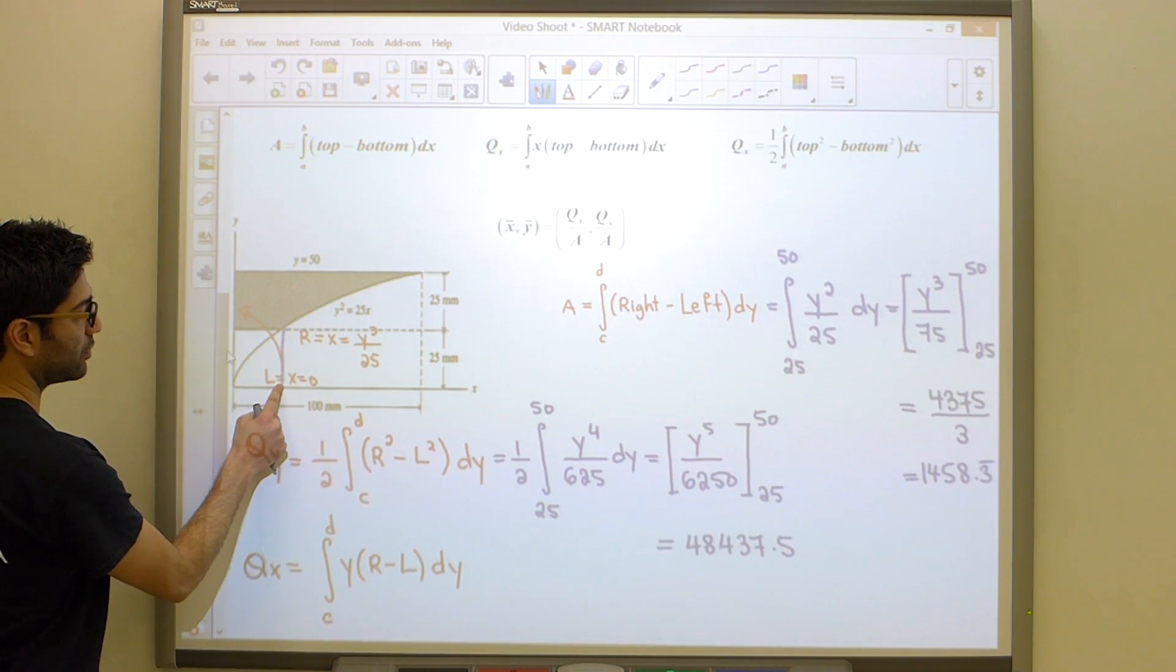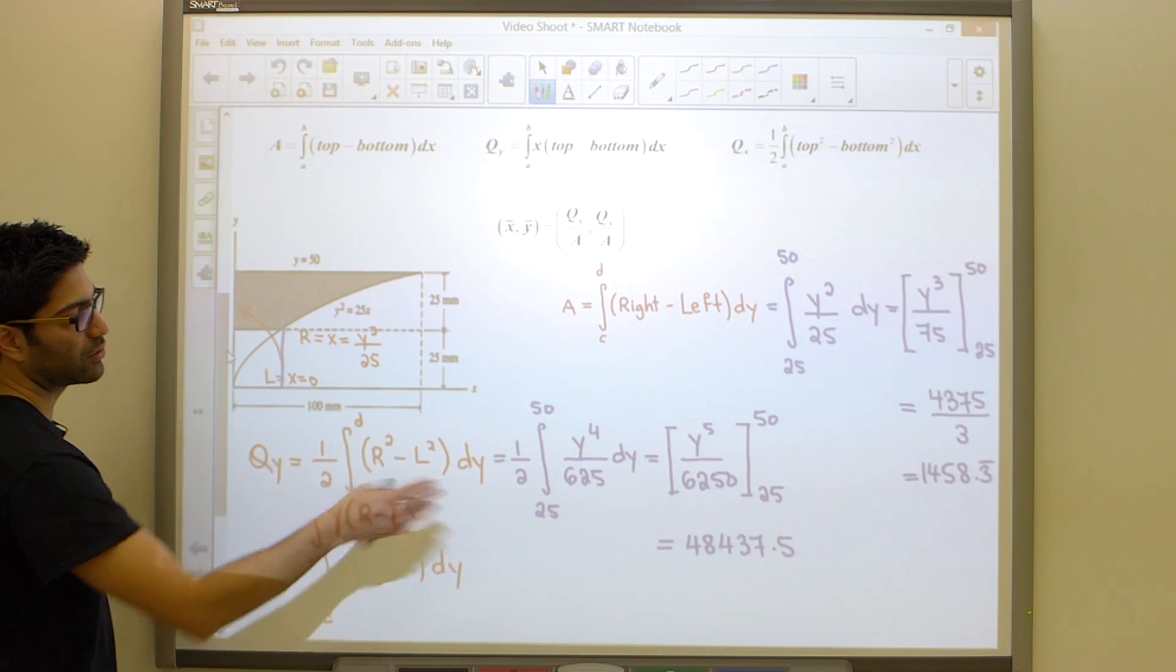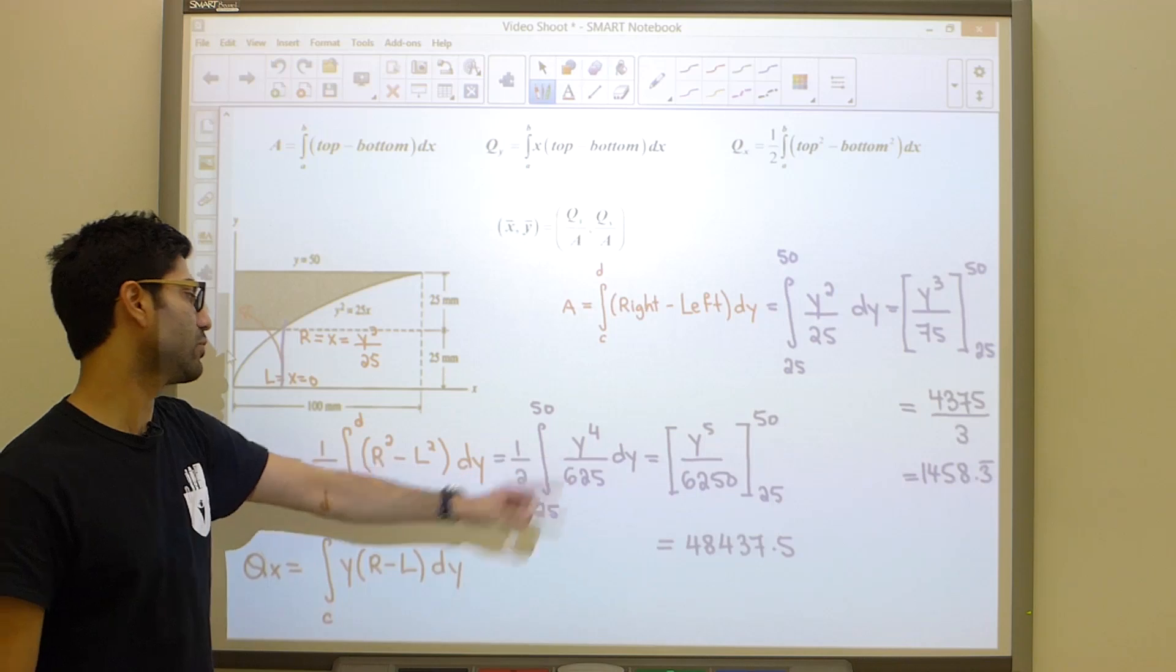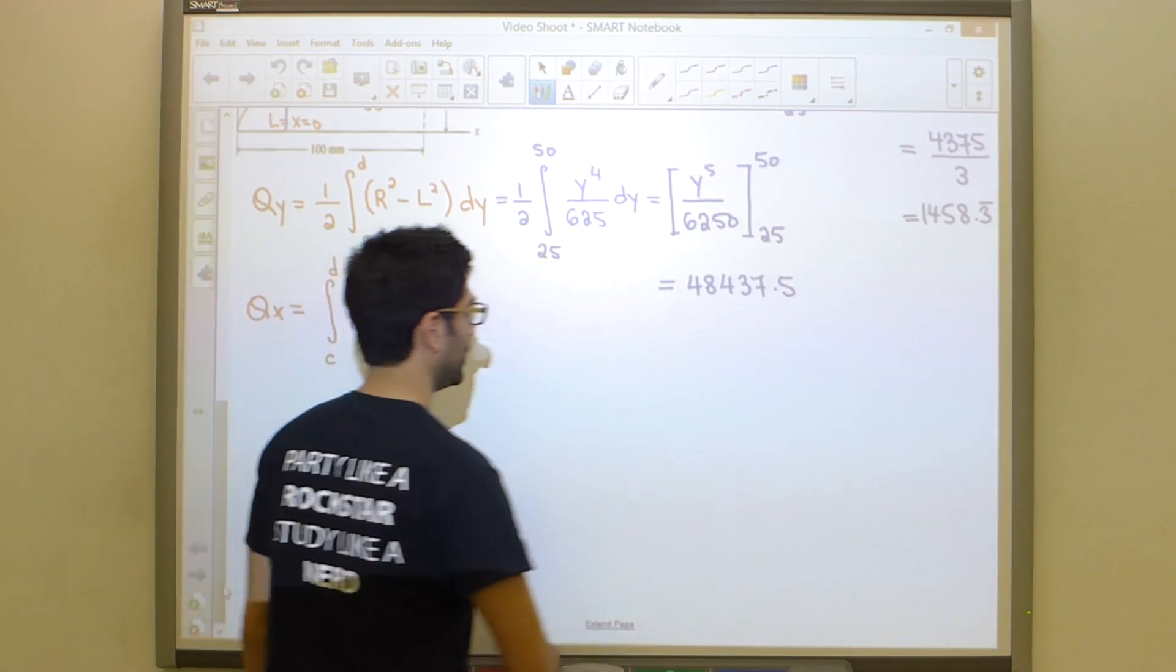It'll be from here, zero to whatever that value is, then from there onwards. So this is definitely the better way of doing this. To get the x coordinate, we're just going to divide our two values, and we will be done.